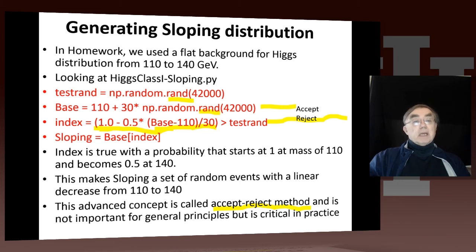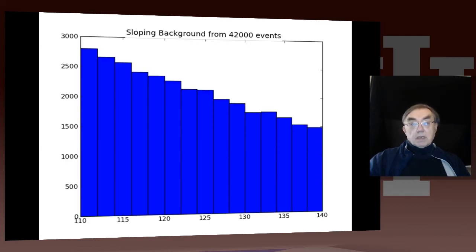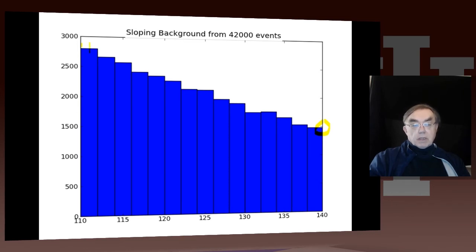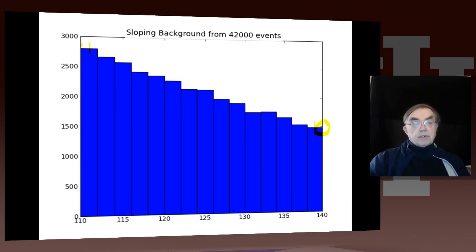When I'm generating those physics events, they are the world's most complicated distributions — there's no way you can invert them and generate things according to that. So you always use this accept-reject method. And that then gives you this result here, which is roughly twice as high at one end as it is at the other. Because of bin sizes, it's not exactly a factor of two — this is really at 111 and this is at 139, so that ratio is not exactly two. But this is the distribution you get from that code.